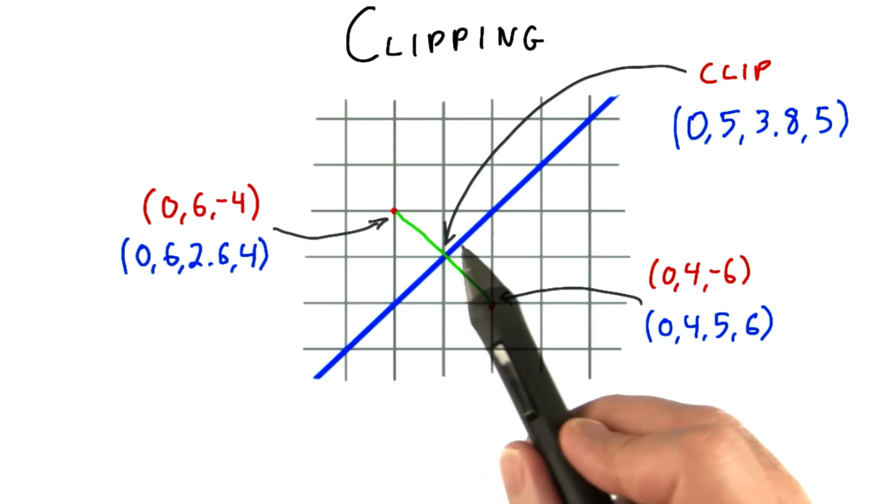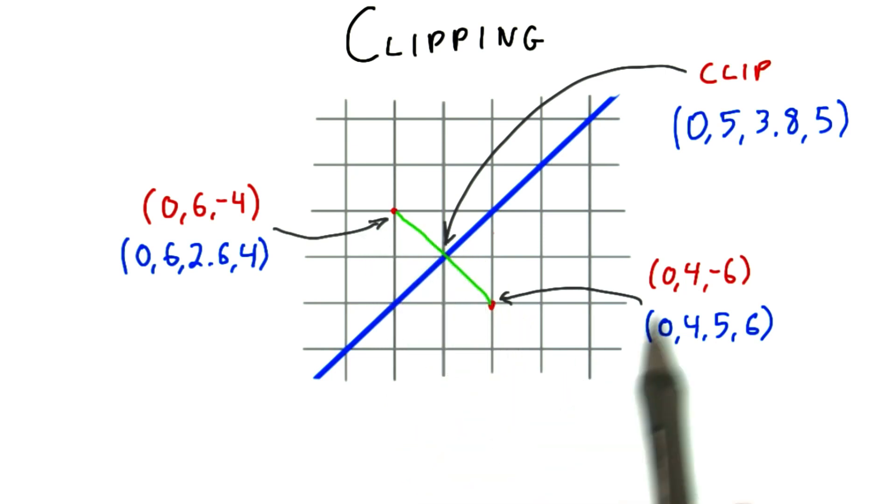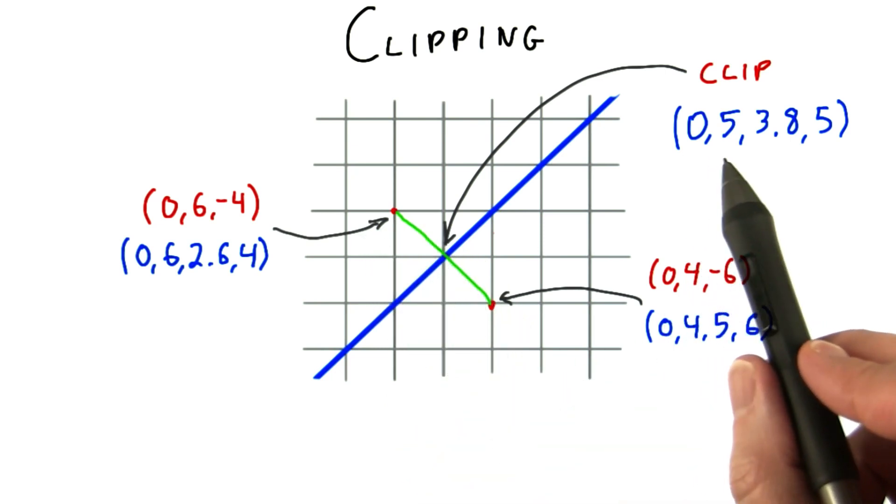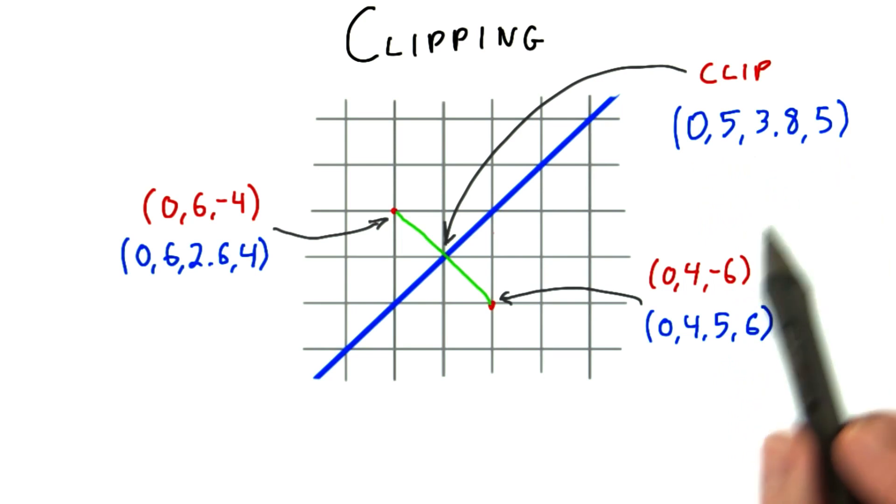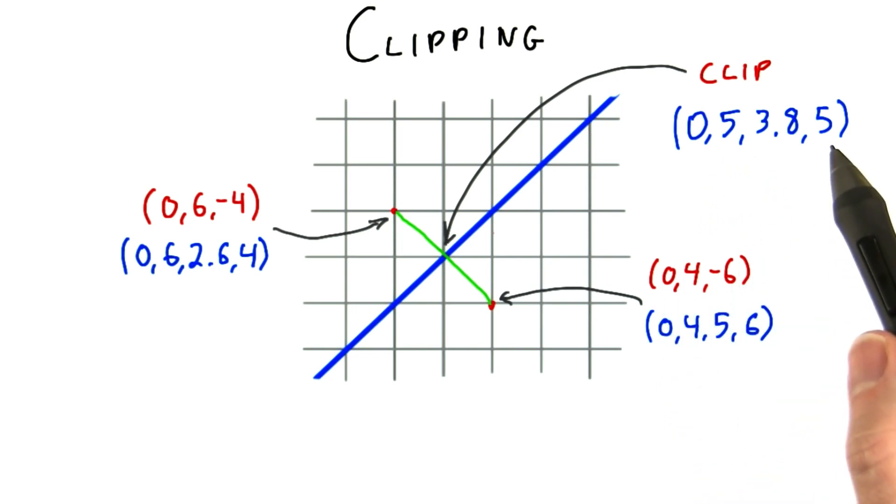For our example, the point on the frustum face is halfway between our two points. The interpolated point is then 0, 5, 3.8, 5. We then divide this point by w as usual to get a point in normalized device coordinates.